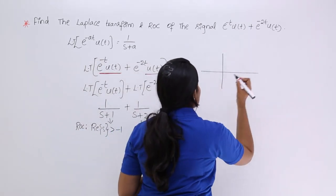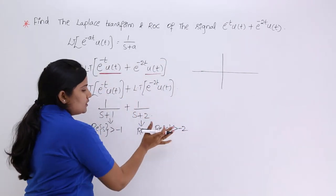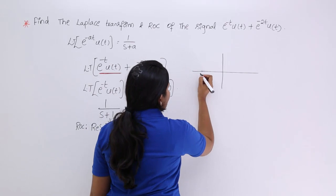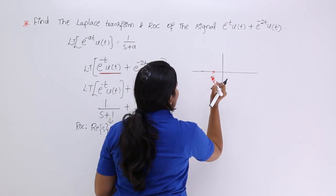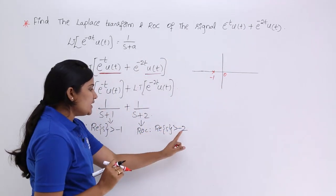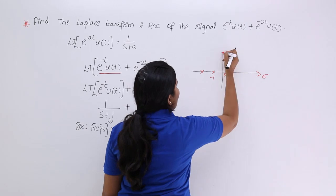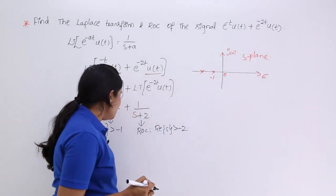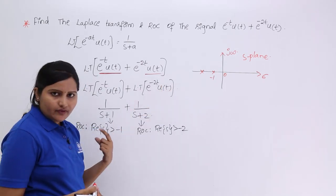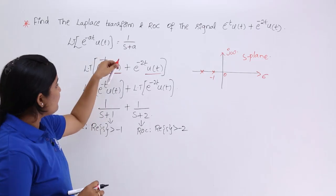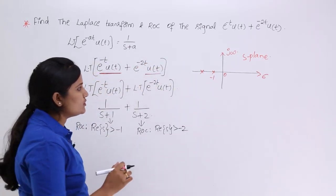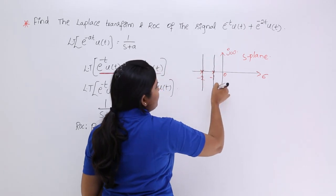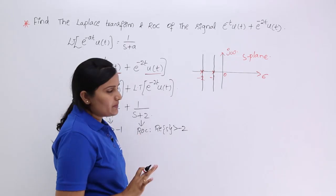Now let's draw the ROCs of the first and second parts to find the total ROC. From the first part, the pole is at minus 1, and from the second part, the pole is at minus 2. Plotting these on the s-plane with the real axis and imaginary axis (j-omega axis), the combined signal has two poles. At these two poles, we draw strip lines parallel to the imaginary axis.